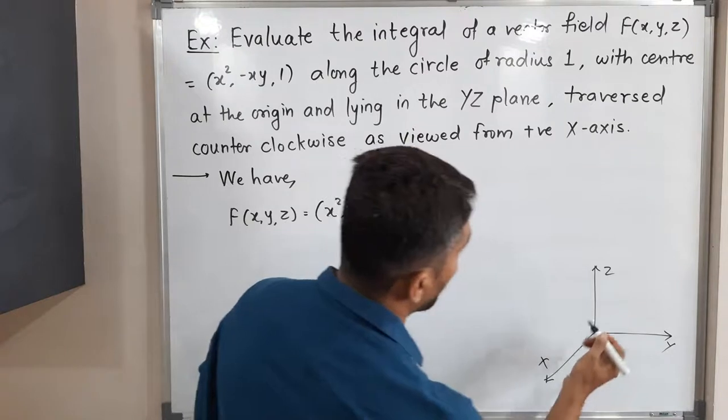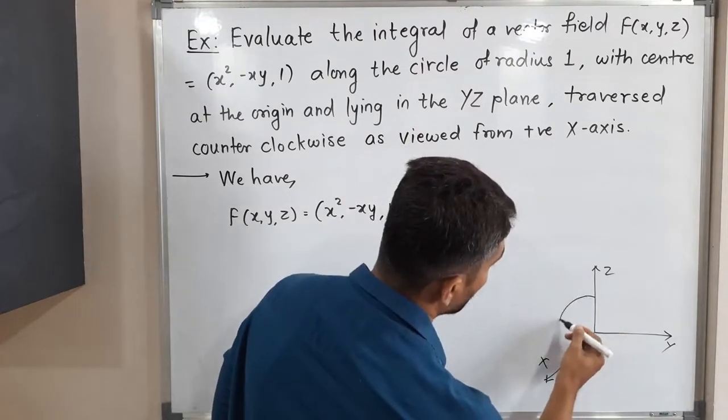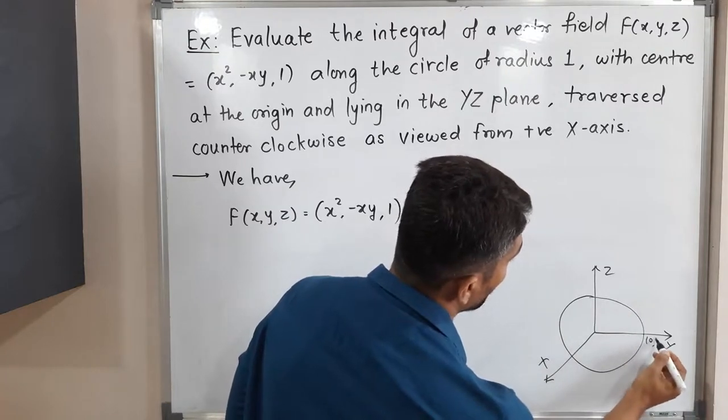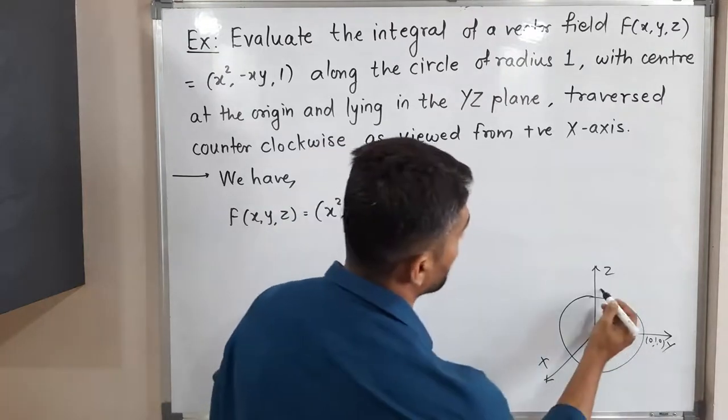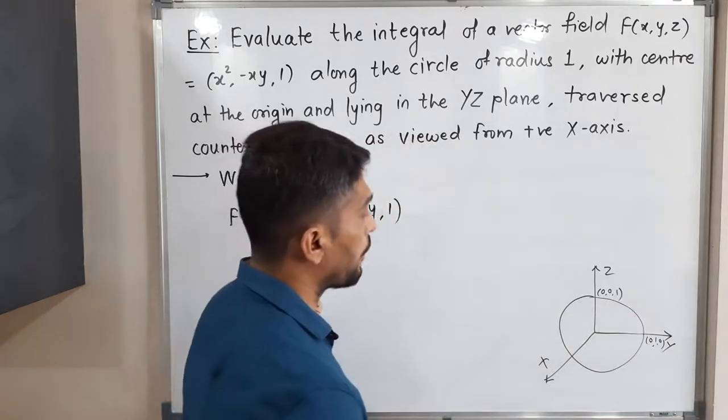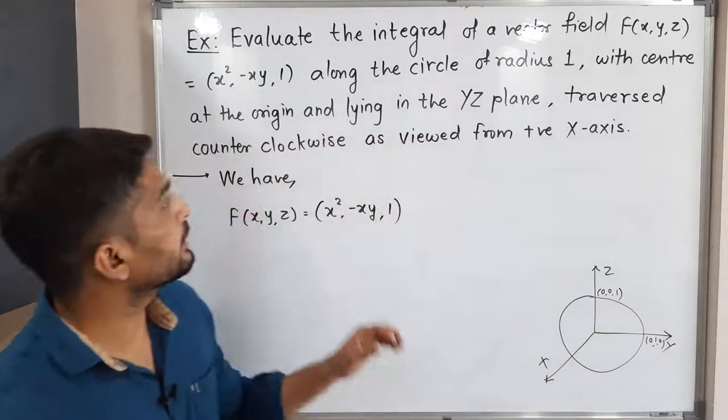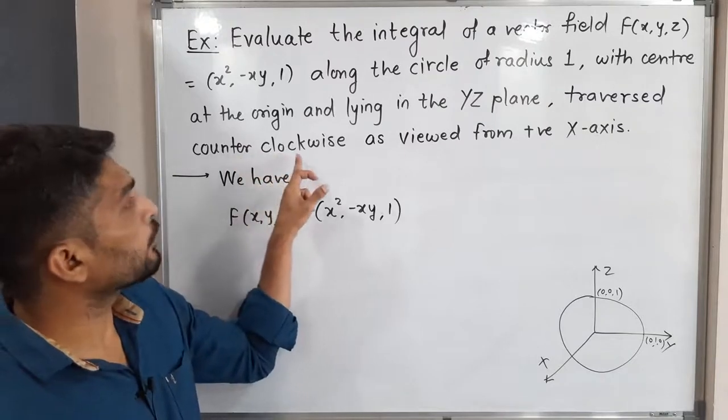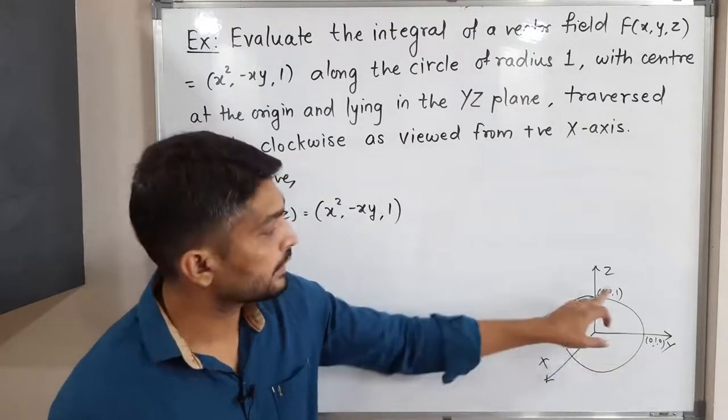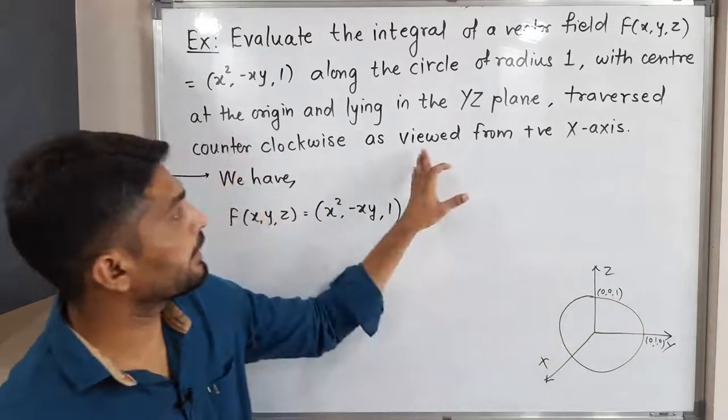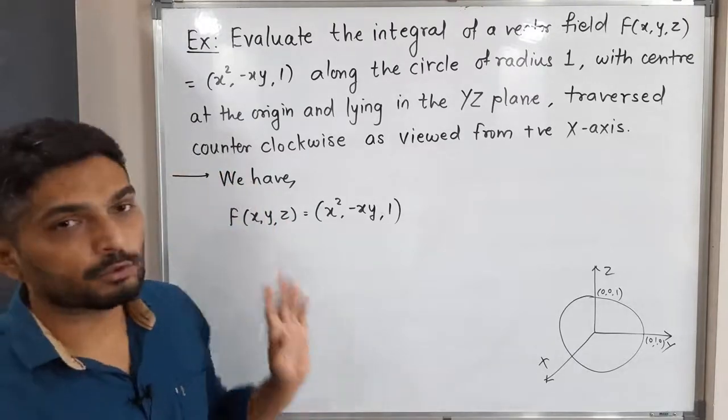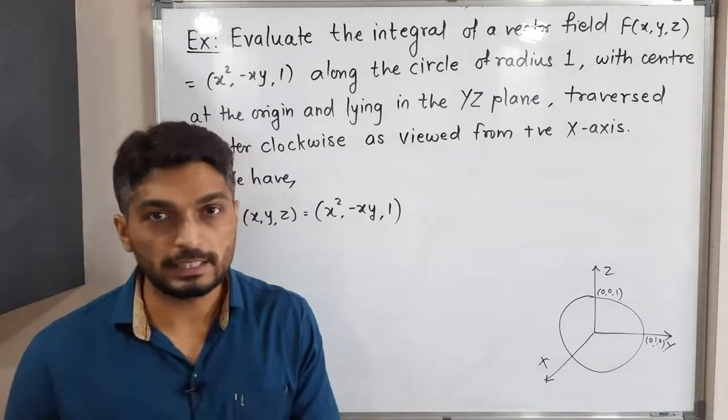So that means we will have a circle like this. I'm drawing a circle here which is in YZ plane, center at origin and radius is 1. So coordinates are (0,1,0) and here (0,0,1). So our circle lies in YZ plane and they have clearly mentioned it moves in an anticlockwise direction, viewed from the positive X-axis. Anticlockwise or you can say counterclockwise, both of them have the same meaning.